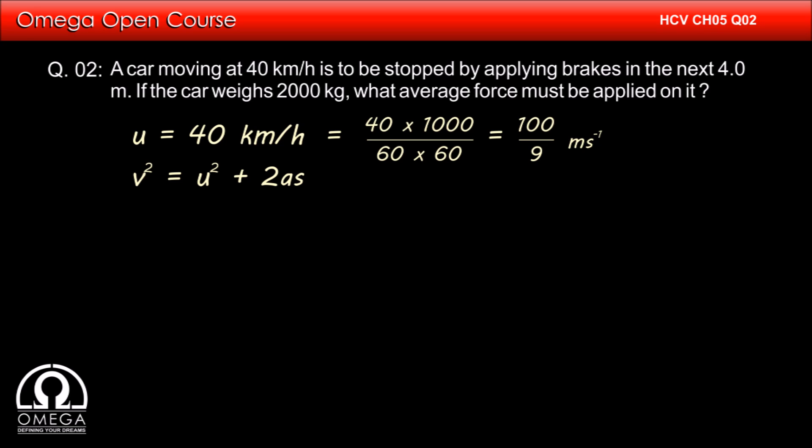From the equation of motion, we have v squared equals u squared plus 2as. Since the car is to stop, its final velocity v is 0.